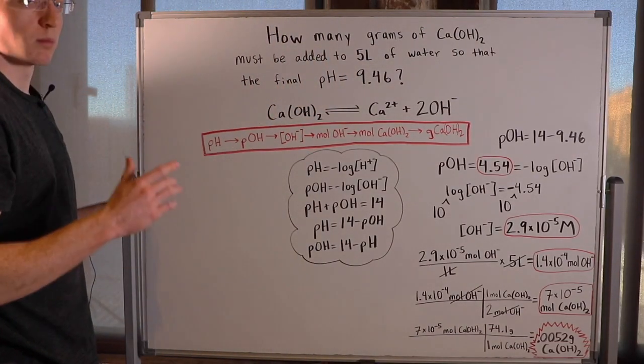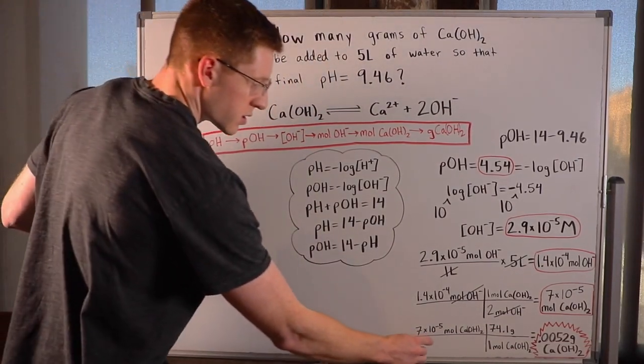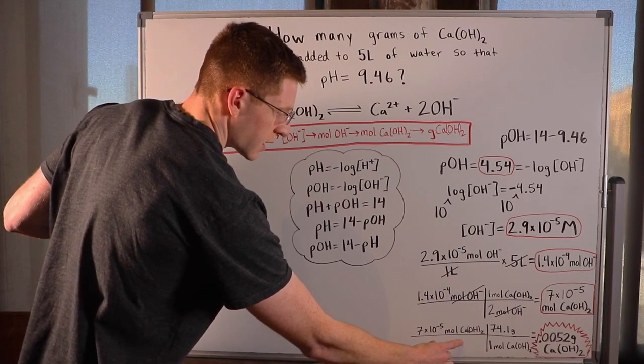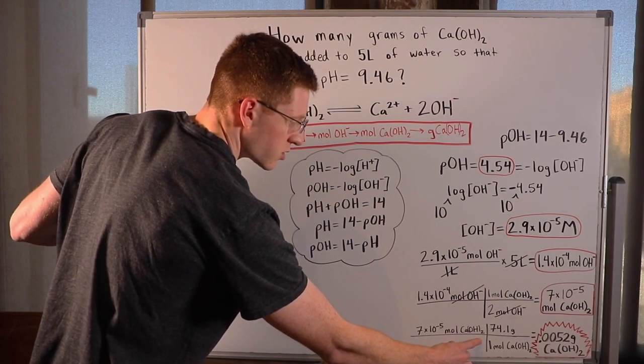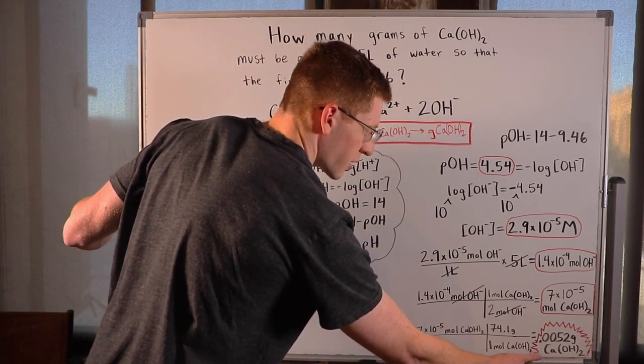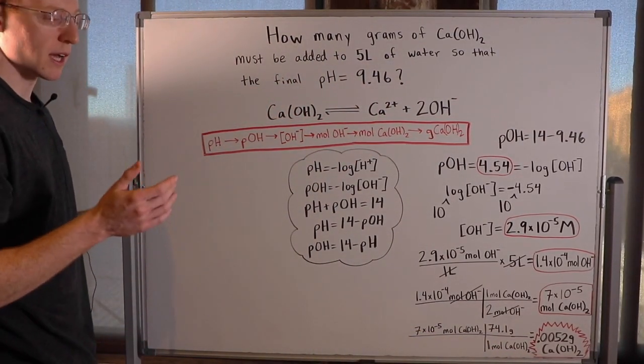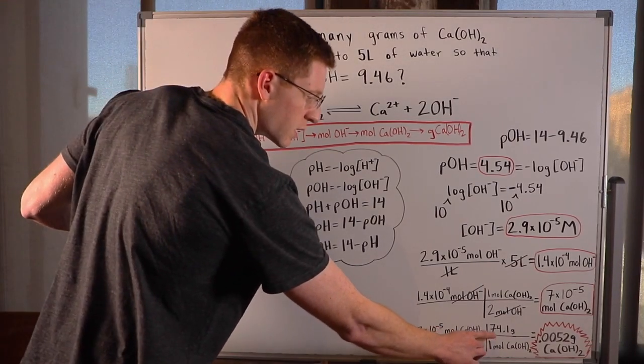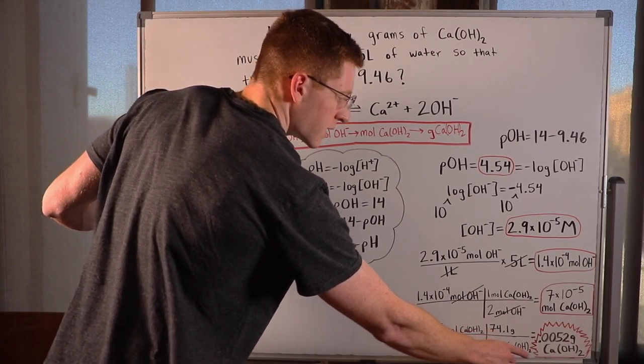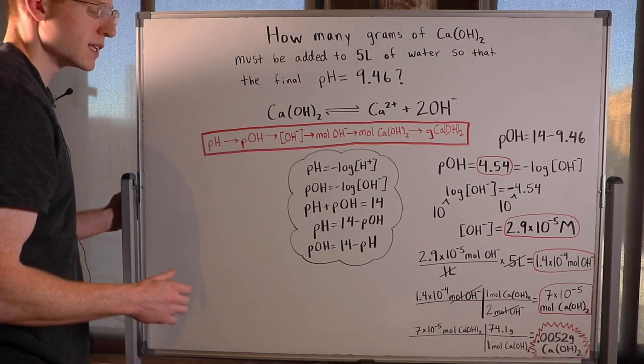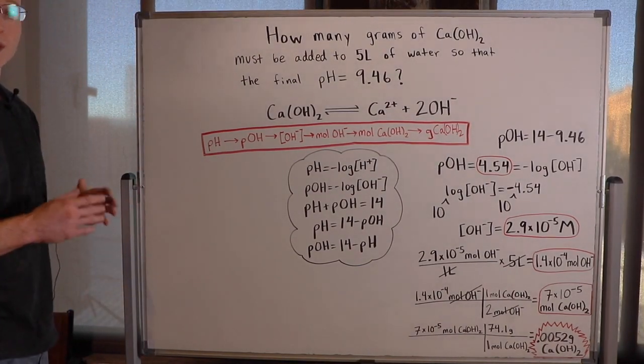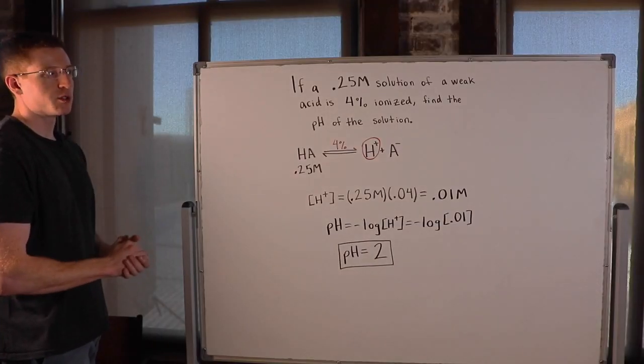And finally, we all know how to convert moles to grams at this point. So 7 times 10 to the negative 5 moles of calcium hydroxide can be converted to grams of calcium hydroxide by multiplying by the molecular weight of calcium hydroxide, which is 74.1 grams. And you get a final answer of 0.0052 grams of calcium hydroxide.